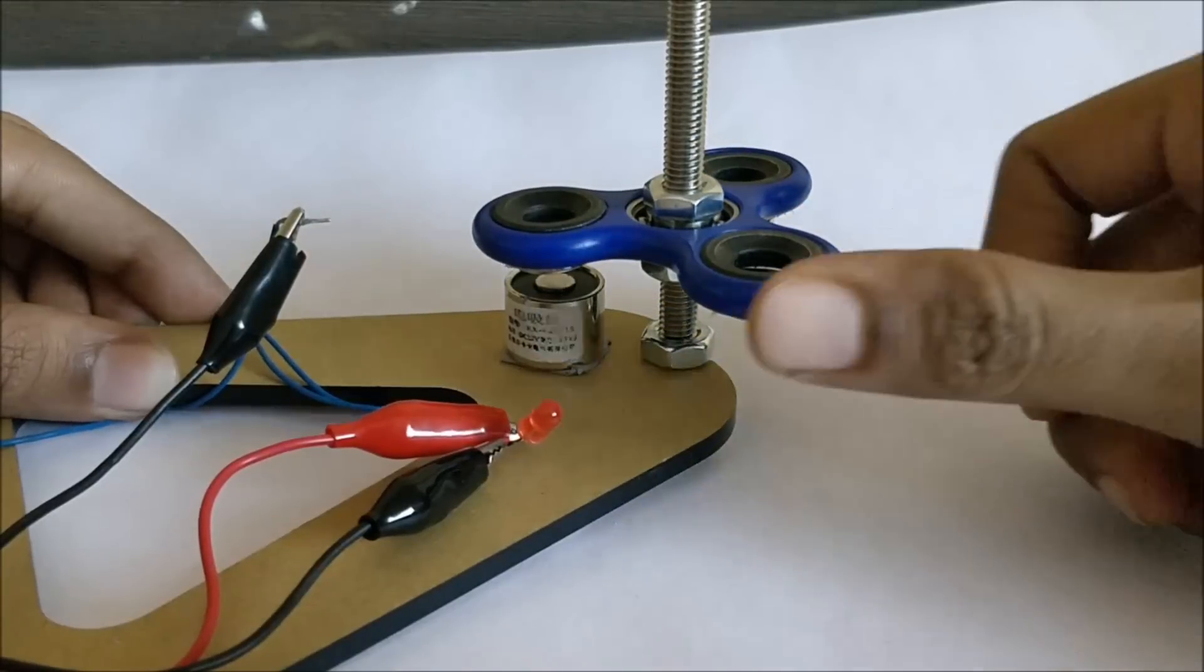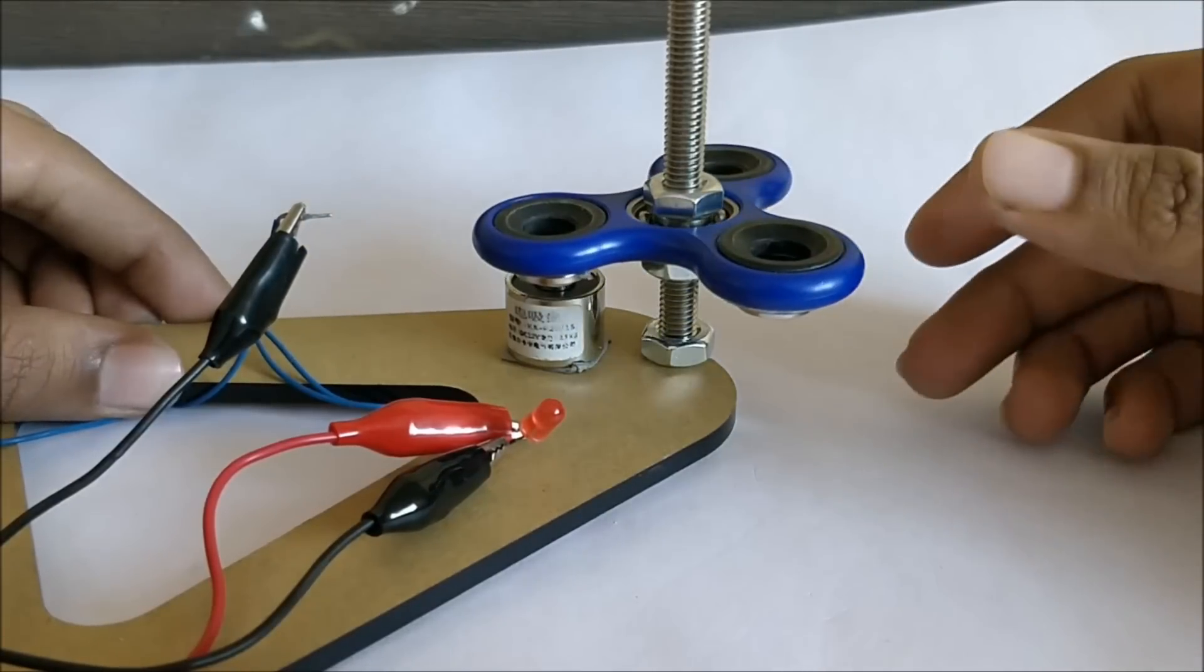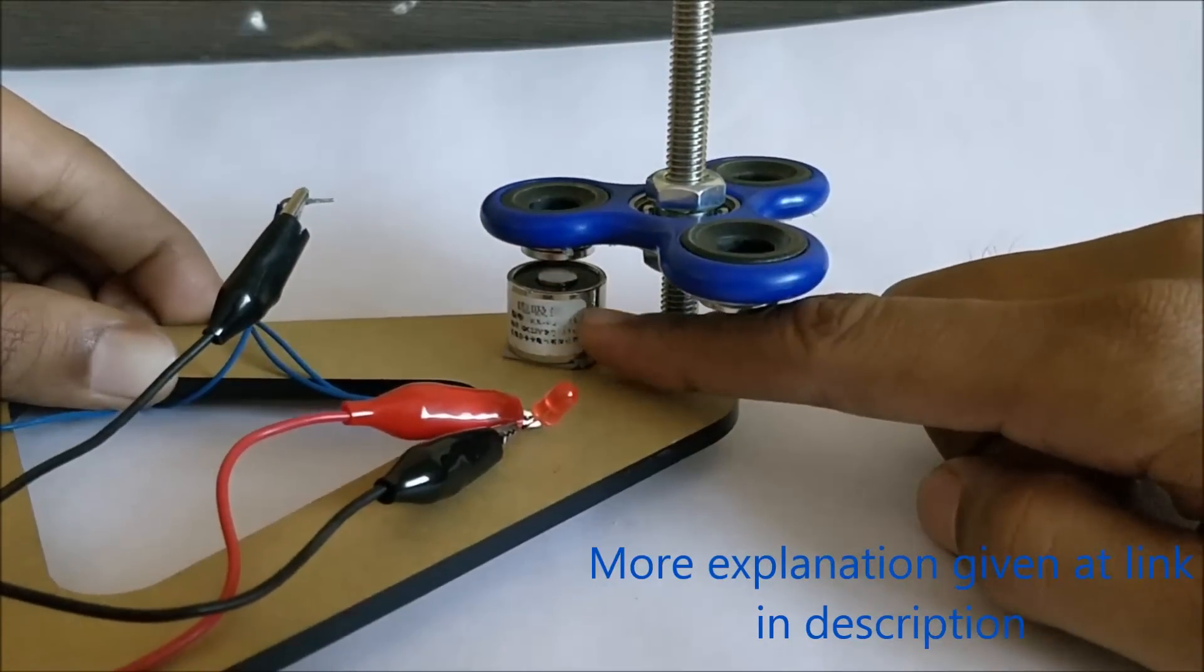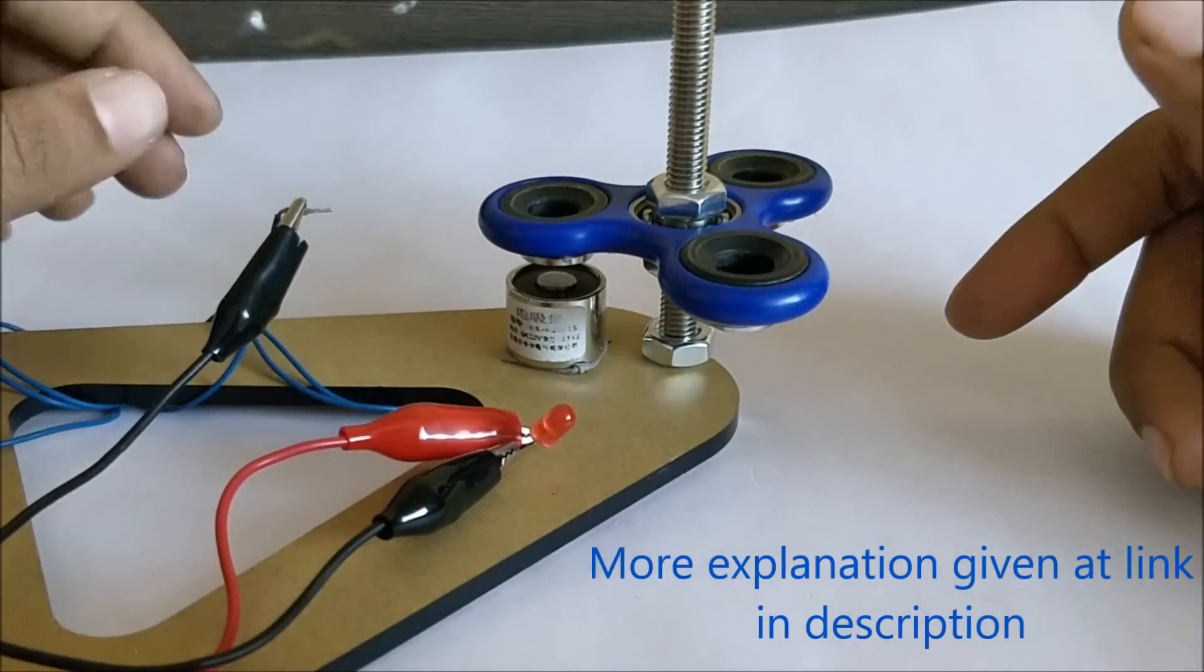Because as I told earlier, a magnetic field is produced and that magnetic field will induce a current through the coil present in this electromagnet, and that current will flow through this LED.